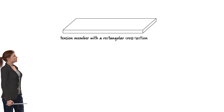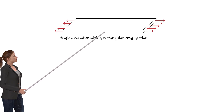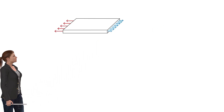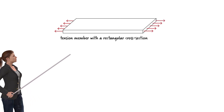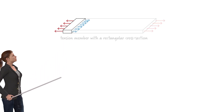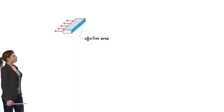Consider a tension member having a rectangular cross-section. Suppose the applied force is distributed uniformly at the ends of the member, as shown here. This causes a uniform tensile stress distribution in the member. If we cut the member at any location, we end up with the same uniform axial stress distribution. The entire cross-section of the plate participates in transferring the applied force from one end of the member to its other end.